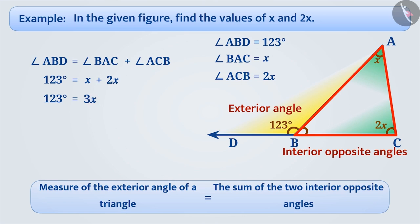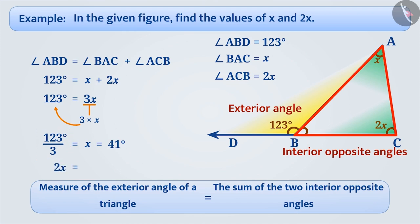We have to find the value of x. On this side, 3 is multiplied with x. If we bring 3 to the other side, then we will have to divide 123 by 3. When we divide 123 by 3, we get x is equal to 41. So 2x is equal to 2 multiplied by 41 degrees, which is equal to 82 degrees. The value of x is 41 degrees and the value of 2x is 82 degrees.